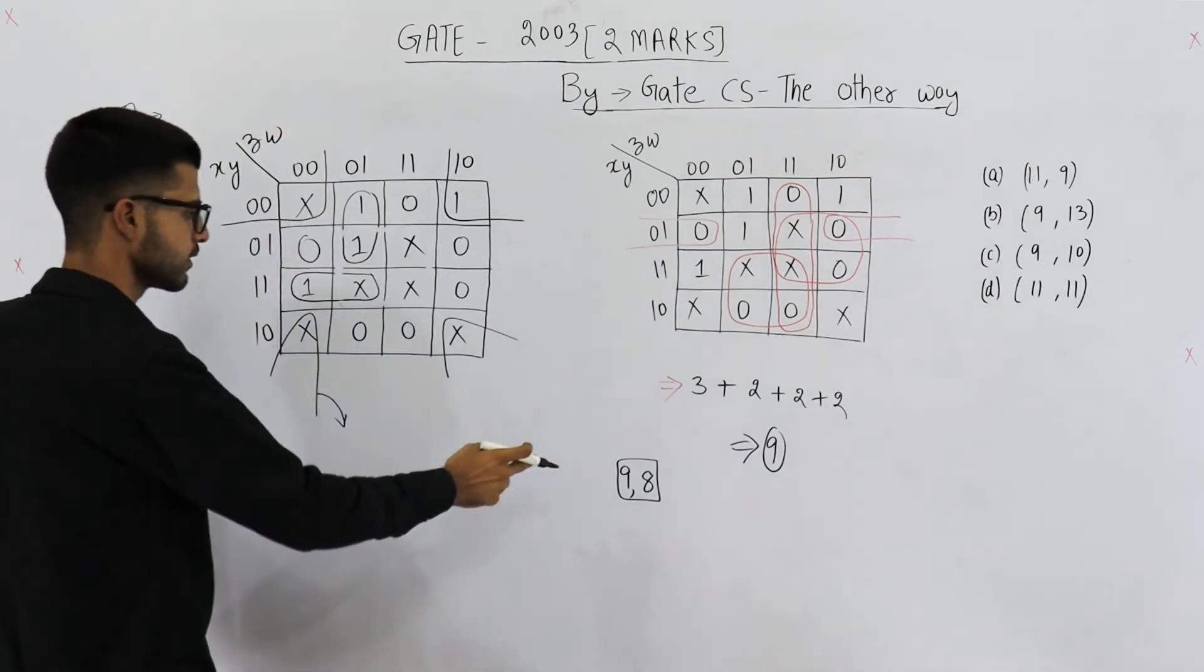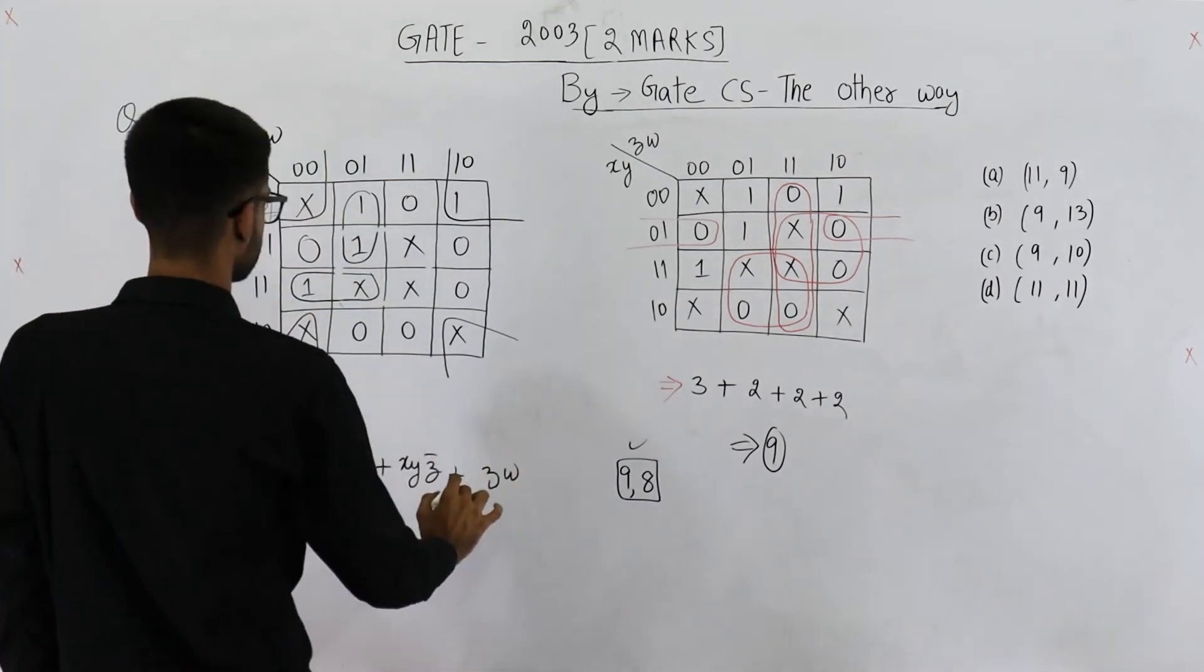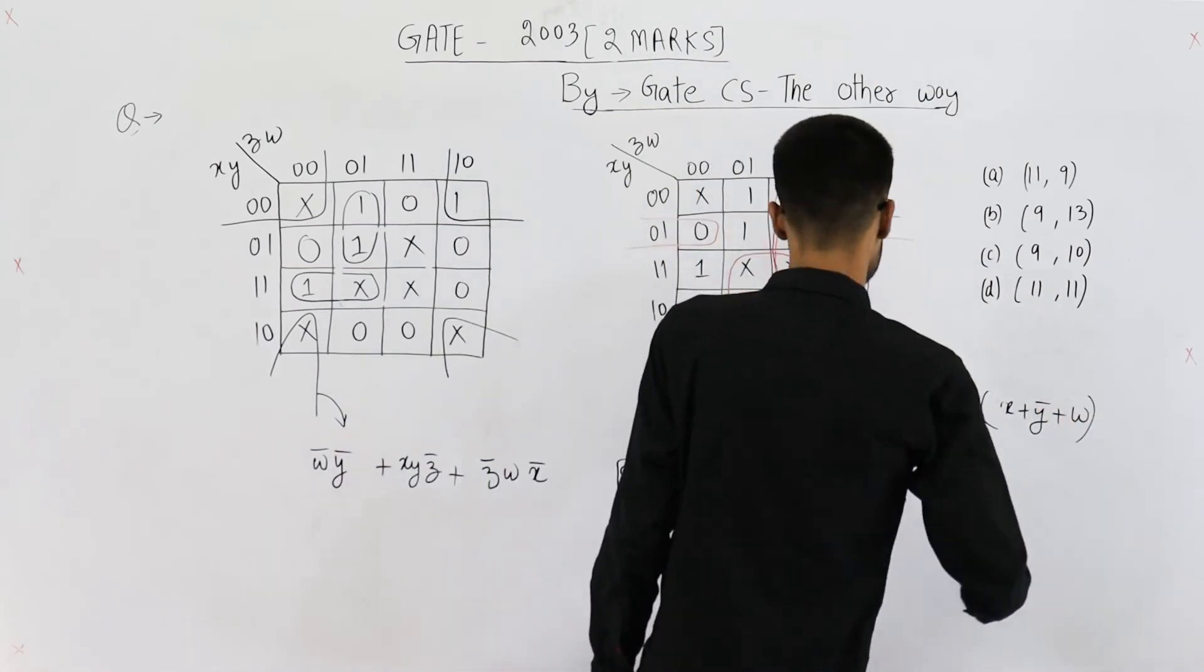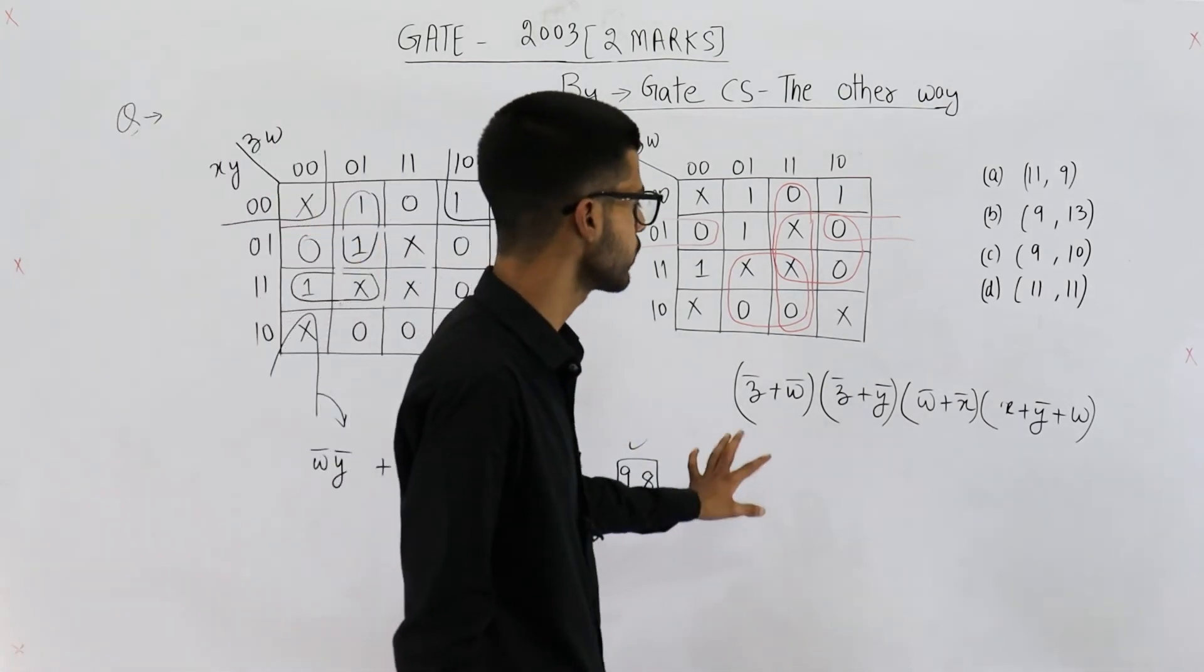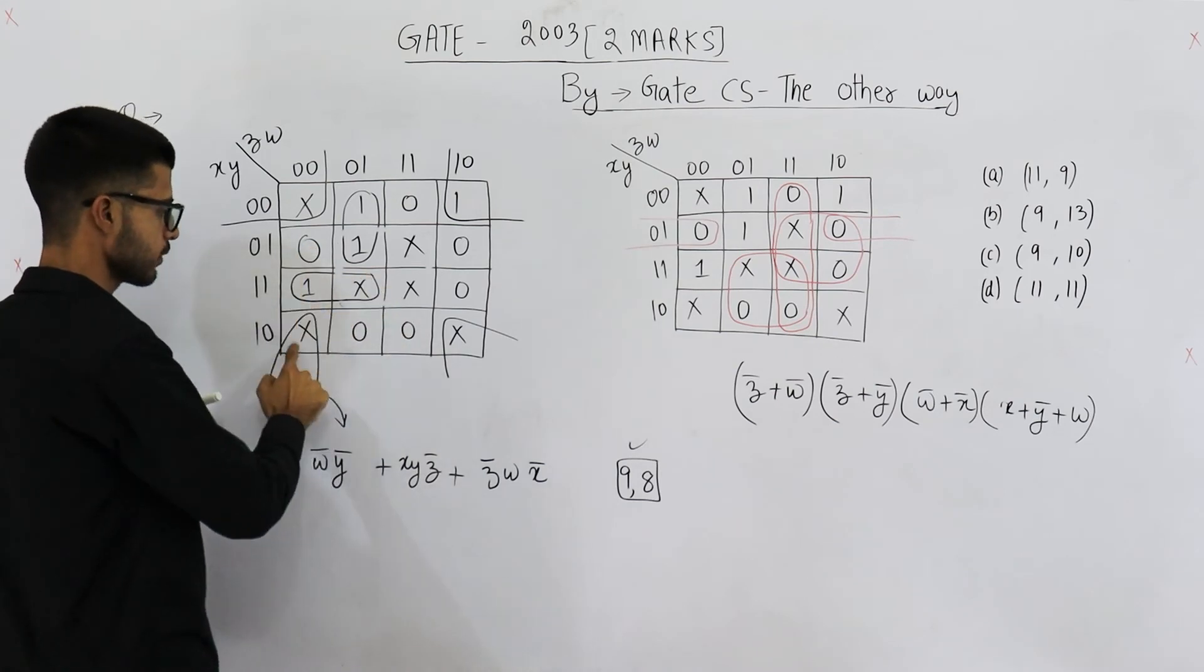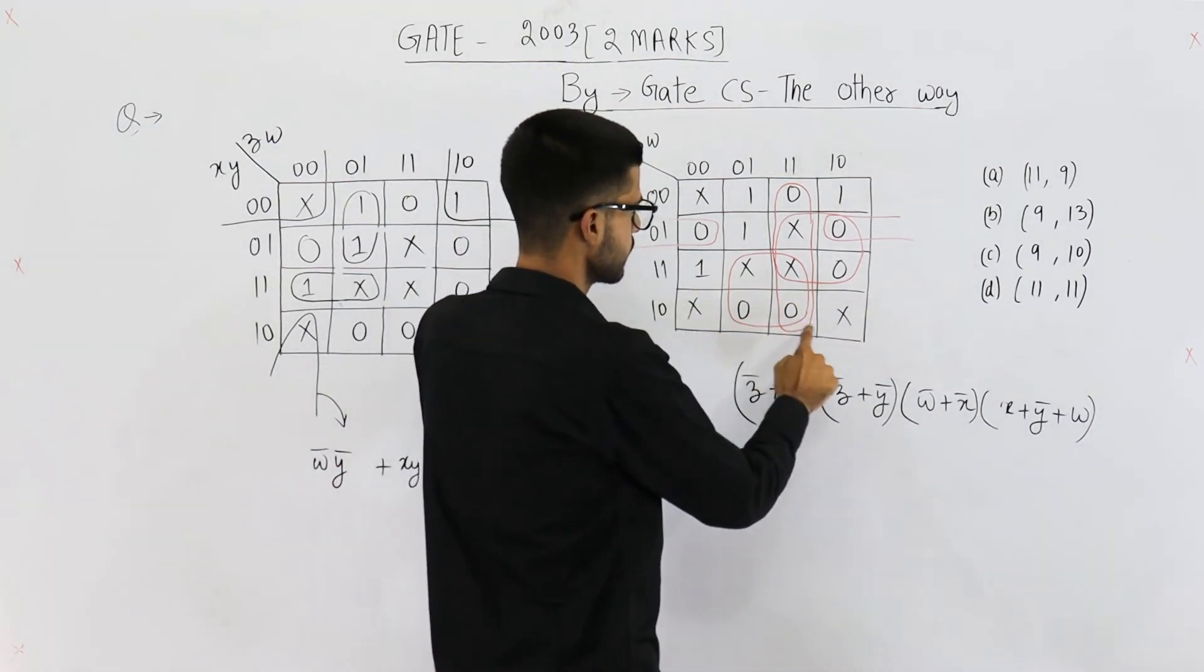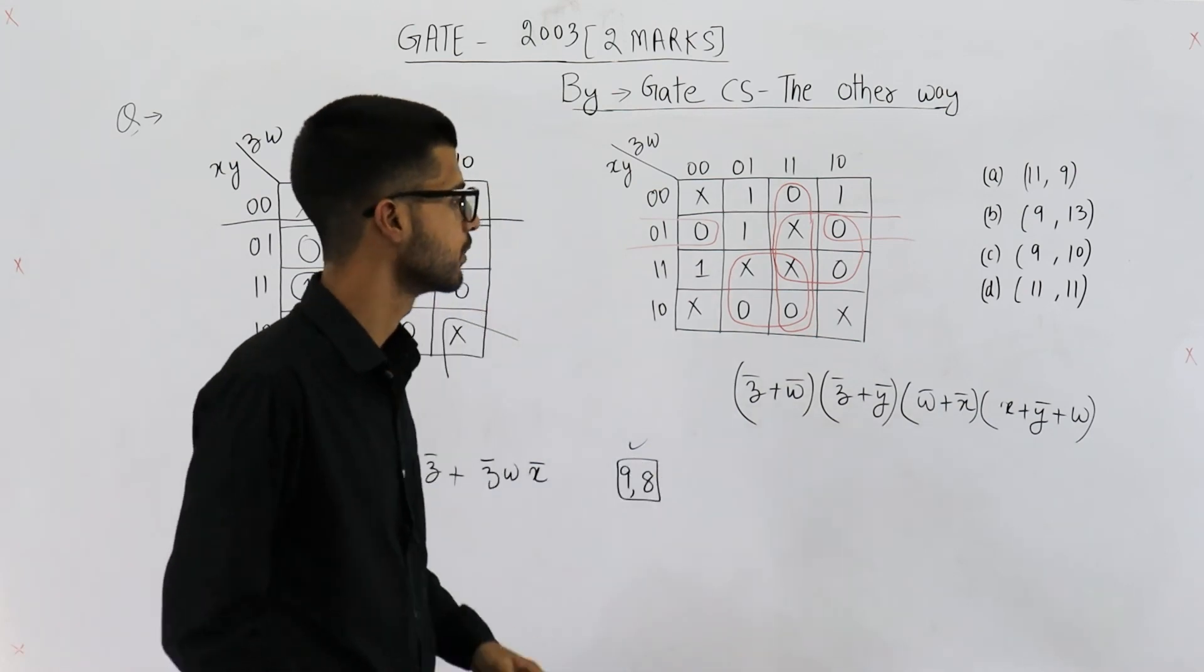So, none of those is correct. Answer is this only. So, these are the minimal possible SOP and POS for this question. Now, I am not saying these are the only answers. That depends on your grouping. For example, in this case, if you make a group of two like this. That one will still be minimal and correct answer. According to my grouping, you will get this answer. Here also, you can see to group these two zeros, you can make a group of four like this. So, you will get some different answer. But according to this grouping, this one is the minimal expression.